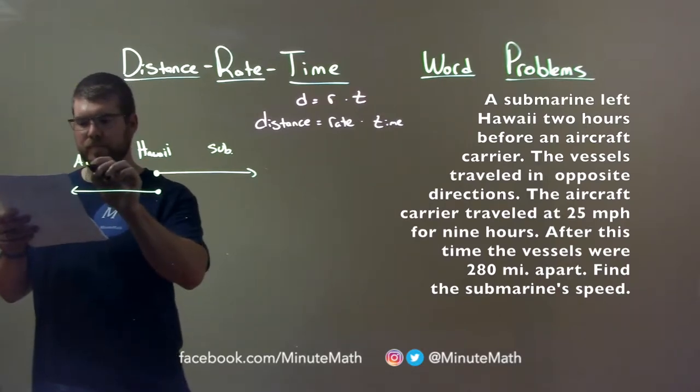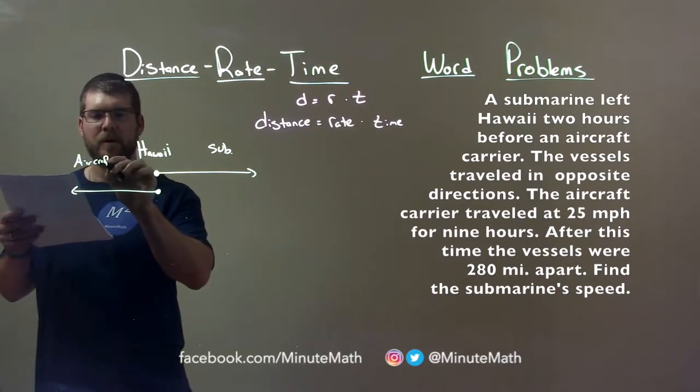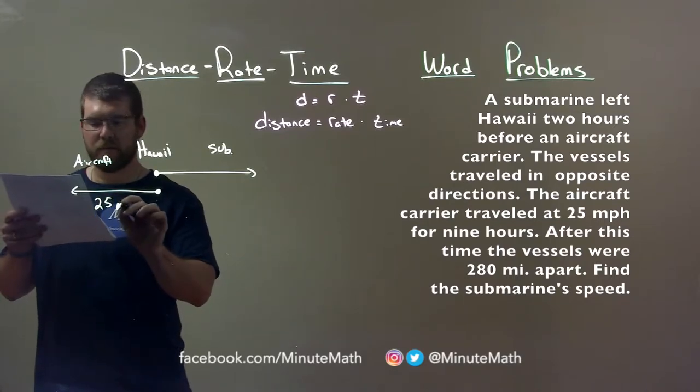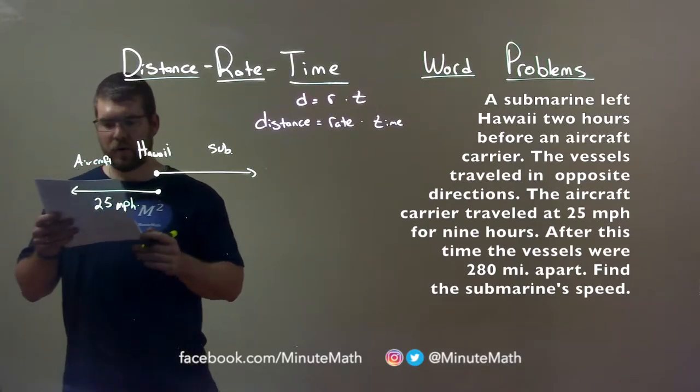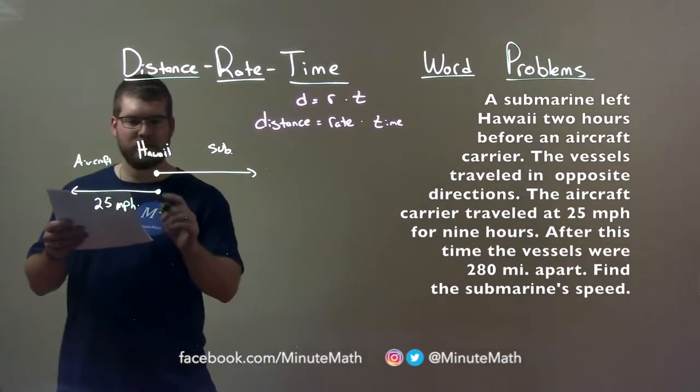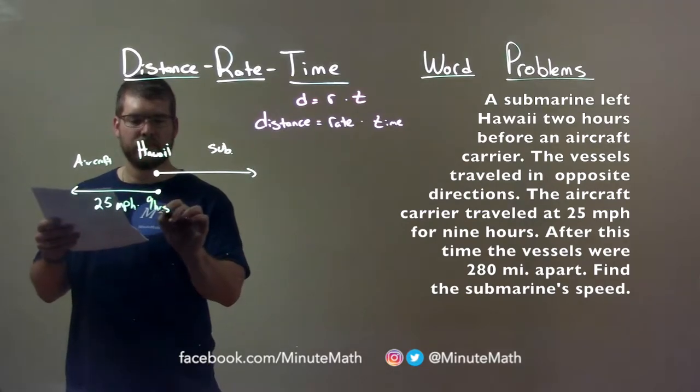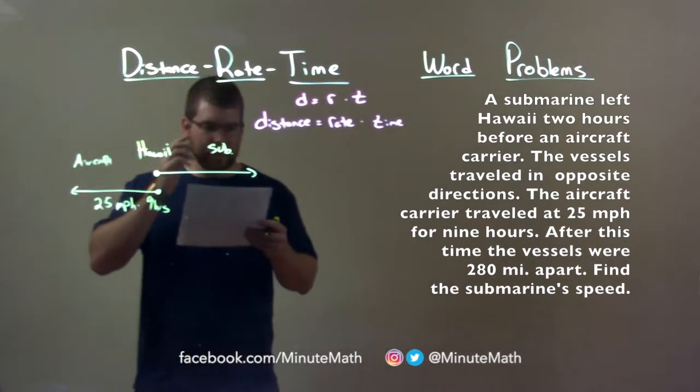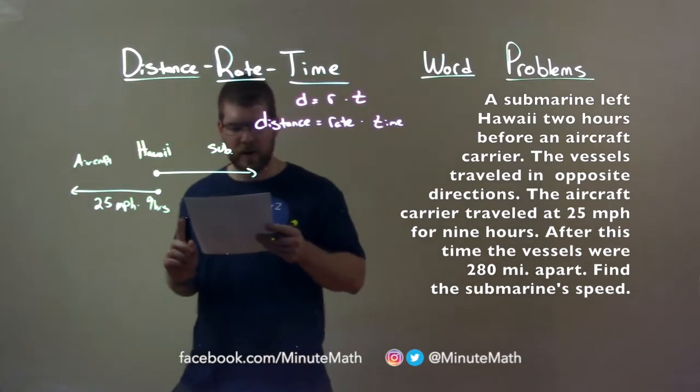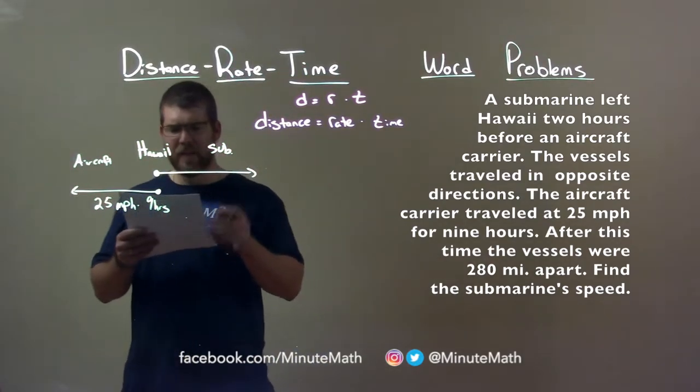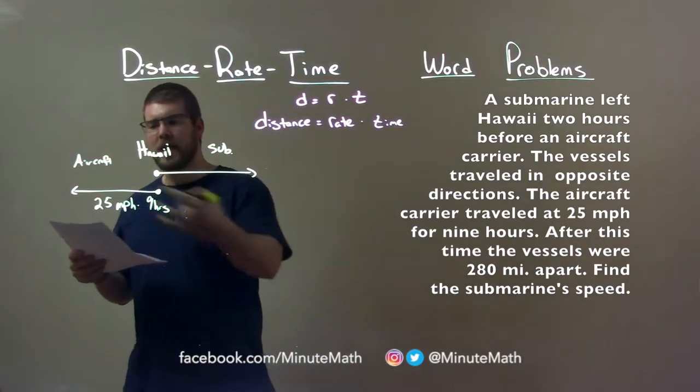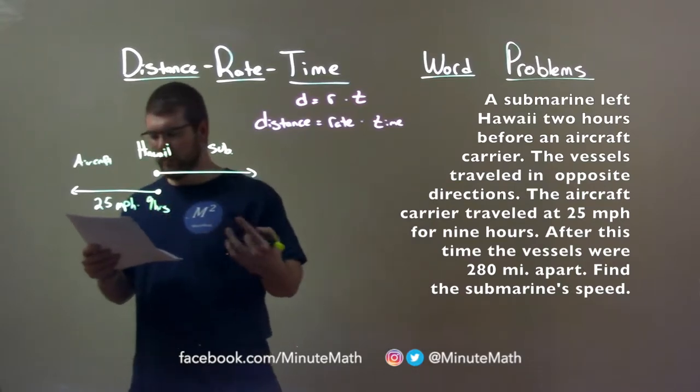And the aircraft carrier traveled 25 miles per hour and they told us that it traveled for a total of nine hours. So the submarine left two hours before the aircraft carrier, and then the aircraft carrier left and traveled 25 miles per hour for nine hours.